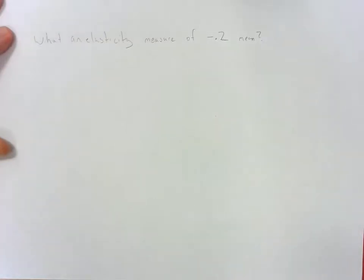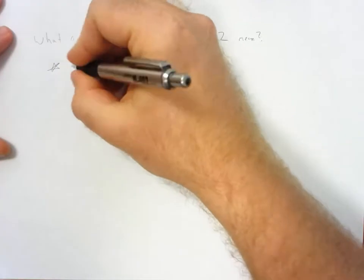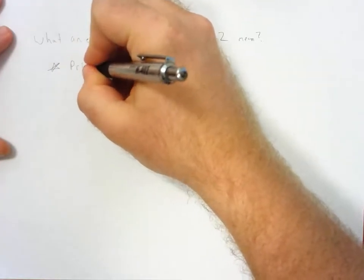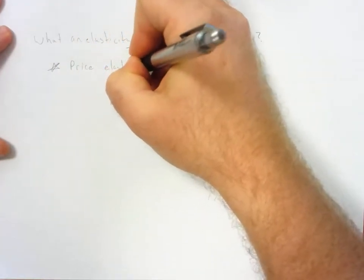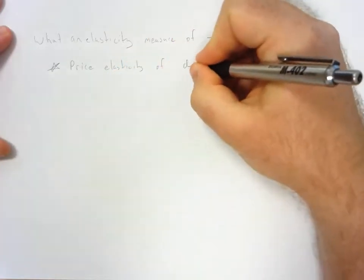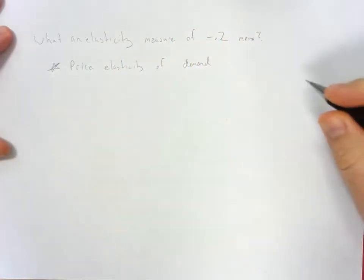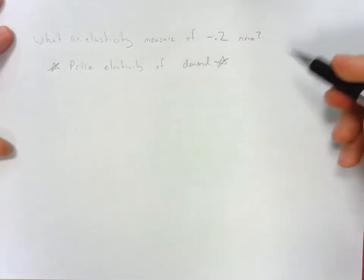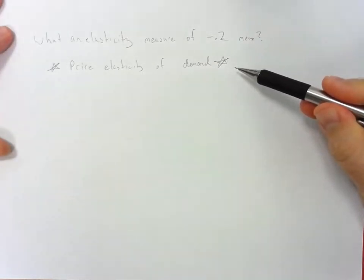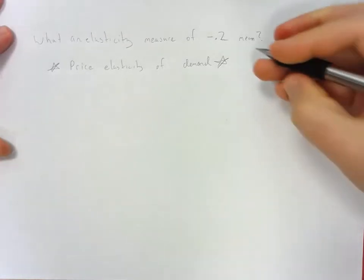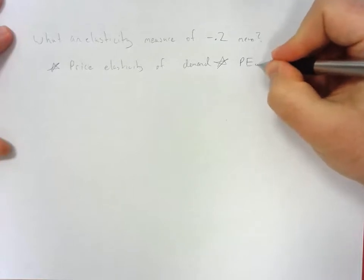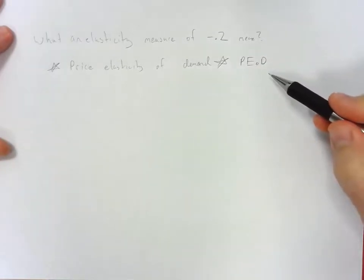So first, if we're just given this elasticity measure of negative 0.2, I have some questions for you. First, I'm going to assume that you're looking for the price elasticity of demand. Why am I going to assume that? Because that's the most common measure of elasticity that economists or economics classes are looking for. So in my other videos, I call this PEOD, price elasticity of demand.